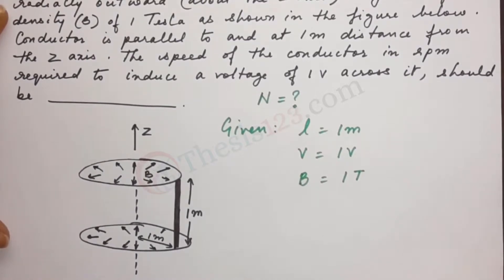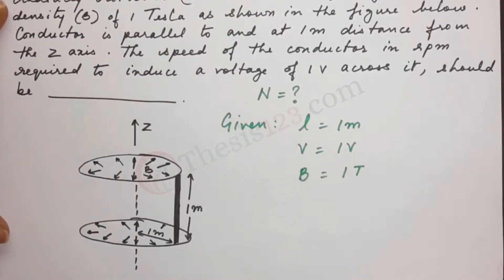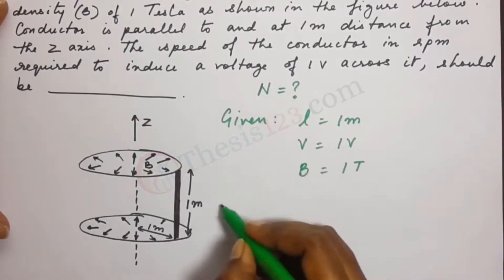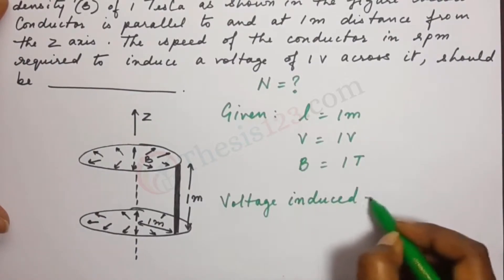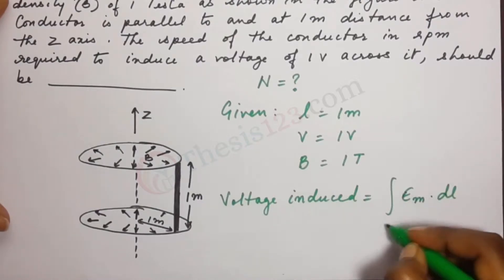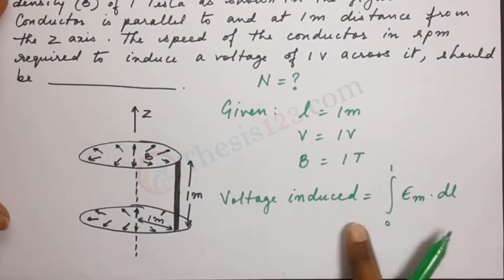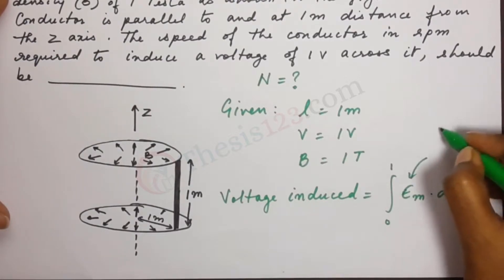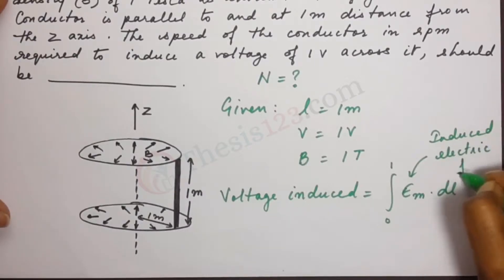So let's start with voltage induced. Voltage induced will give us an expression in terms of electric field or induced electric field. So the voltage induced is equal to integral of E_m · dl from 0 to 1. The voltage induced is equal to the integral of the induced electric field.